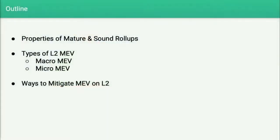So a rough outline. I'm first going to talk about the properties of a mature and sound rollup that I will define. Then I'm going to talk about two types of MEV on layer 2: one I call macro MEV and the other one micro MEV, for a reason that will become clear.